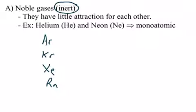Remember the second assumption: an ideal gas is a gas that neither attracts nor repels. Noble gases are the ones that behave the most like that because it is their nature not to interact — neither attract nor repel.